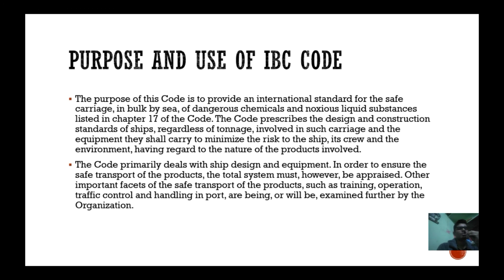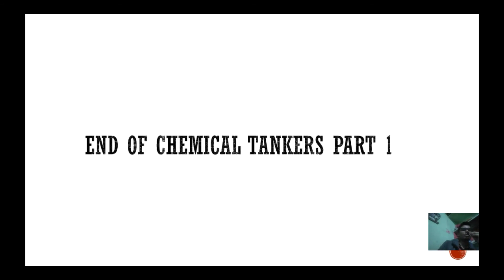The code primarily deals with ship design and equipment. In order to ensure safe transport of products, the total system must be appraised. Other important aspects of safe transport such as training, operation, traffic control, and handling in port are being or will be examined further by the organization. This is the end of chemical tankers Part 1.